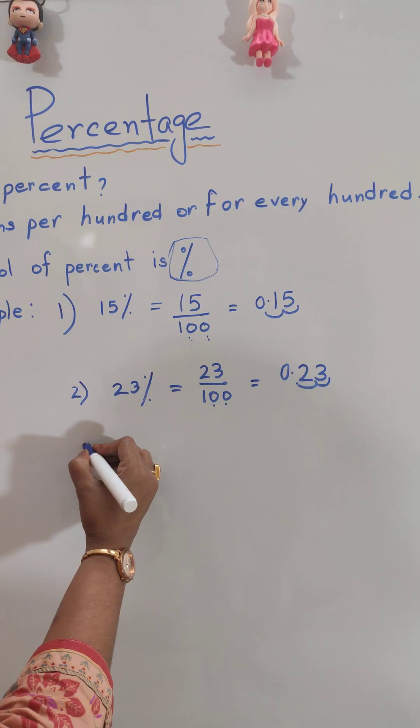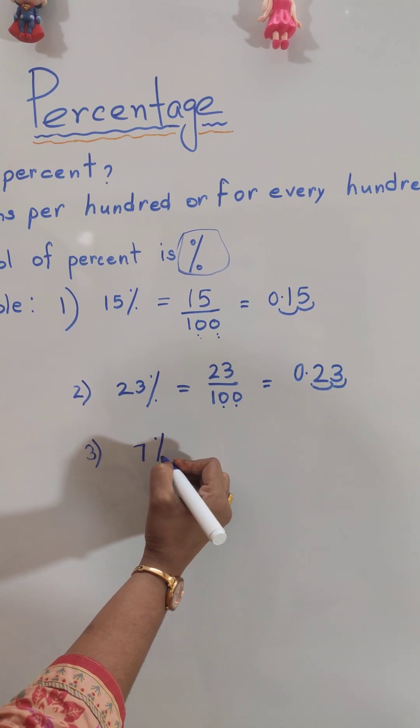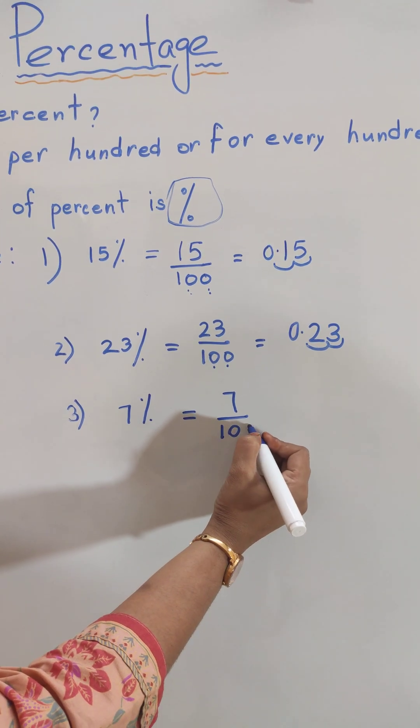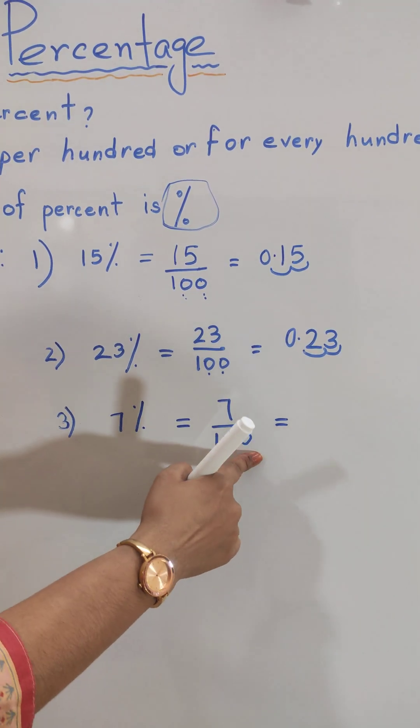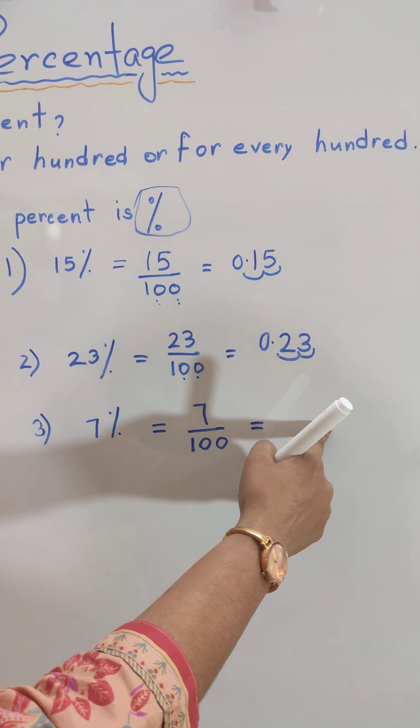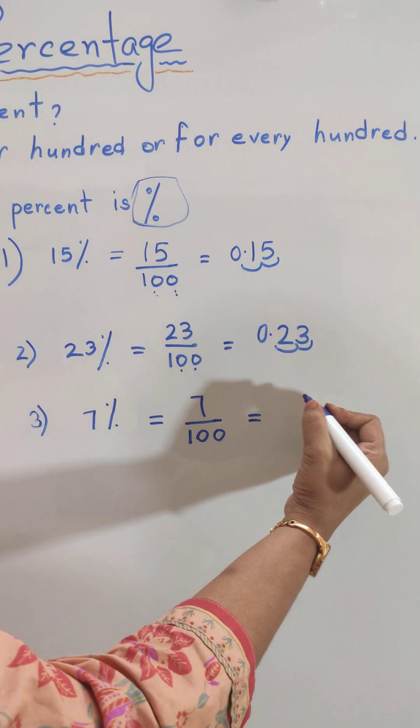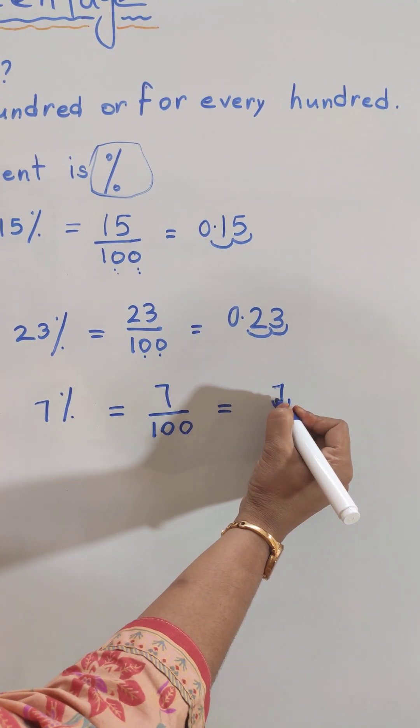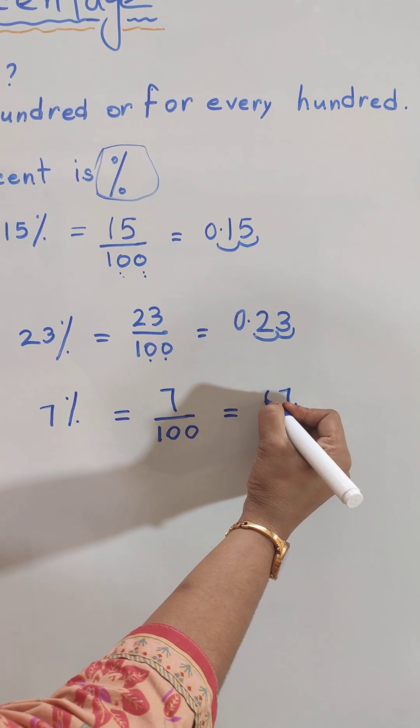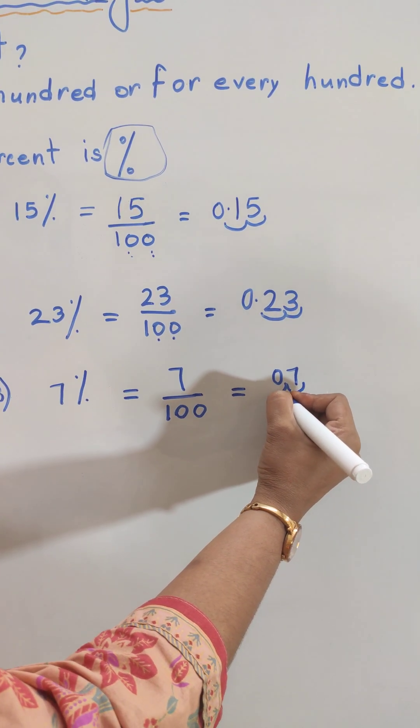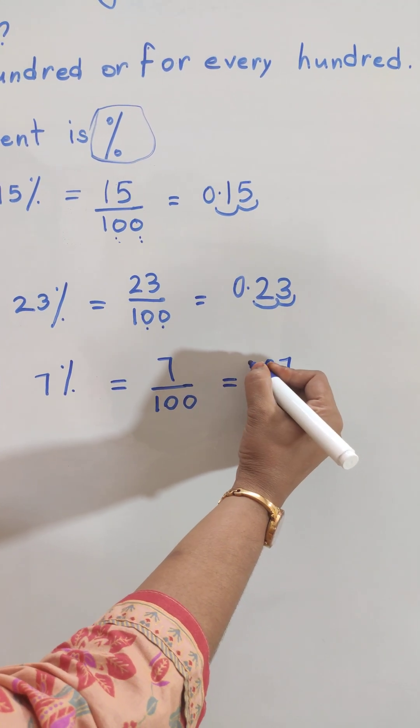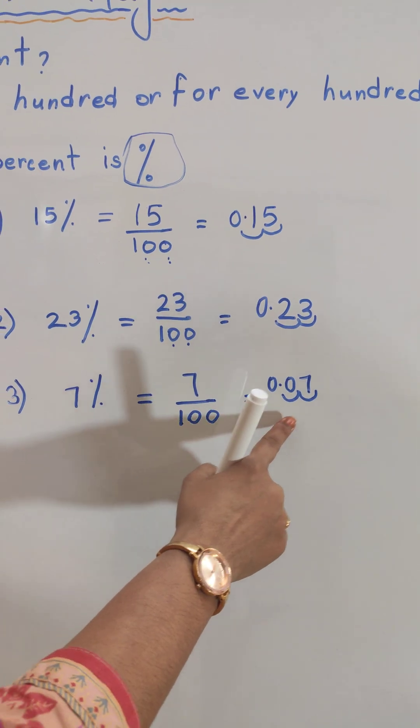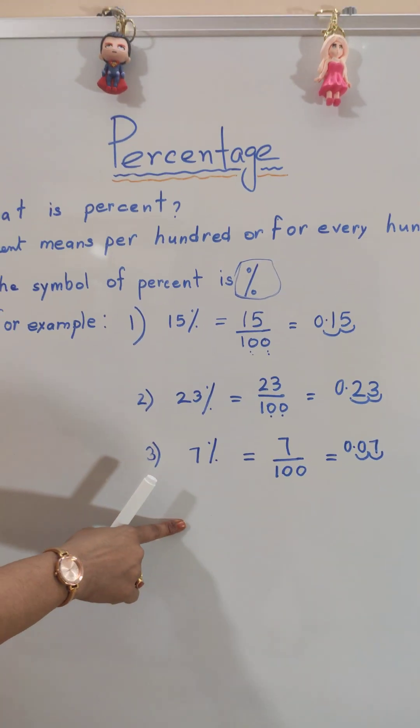Let me give you another example: 7%. Seven percent means 7 by 100, equal to two zeros. So we need to move two places to the left. For two places, first write 7. Then we will move one place. Here is no number, so we will give 0. Another place we will move and give the decimal point and 0. So 7% equals 0.07. Hope it's clear to you all.